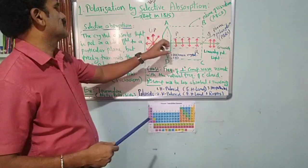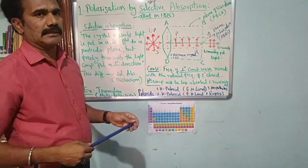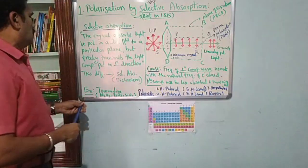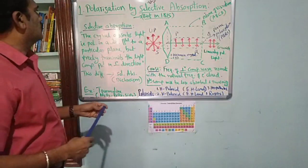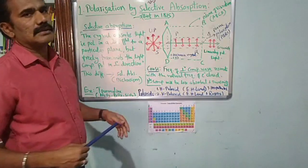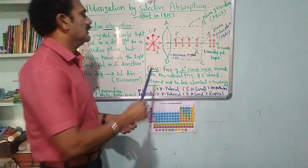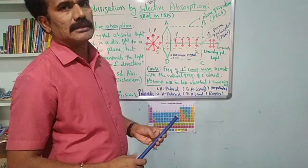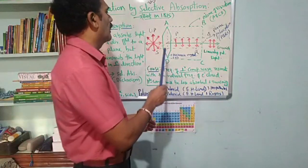This method of selective absorption is also called dichroism, and hence the corresponding crystal is called a dichroic crystal. This means the tourmaline crystal is also called a dichroic crystal.